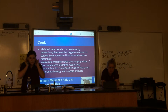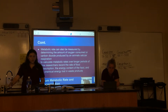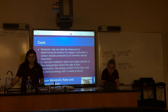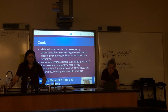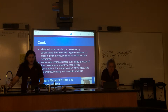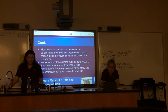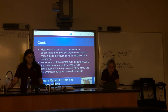Metabolic rate can also be measured by determining the amount of oxygen consumed or carbon dioxide produced by an animal through cellular respiration. To calculate metabolic rates over longer periods of time, researchers record the rate of food consumption, the energy content of the food, and the chemical energy lost in waste products.